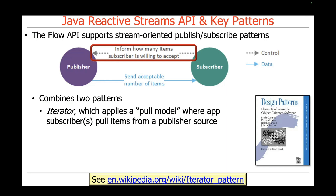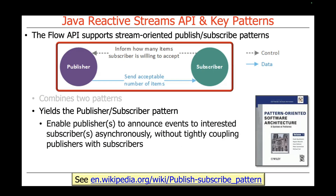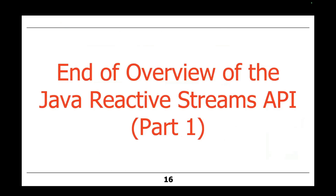The iterator pattern uses a pull model where subscribers tell publishers how many items they can pull at a given time. Then there's the observer pattern — another Gang of Four pattern — which applies a push model that reacts when a publisher's source pushes an item to one or more subscriber sinks. Iterator and observer are basically how the Reactive Streams Flow API interacts along a pipeline. This yields the publisher-subscriber pattern described in the POSA 1 book, enabling publishers to announce events to interested subscribers in an asynchronous manner without tightly coupling publishers with subscribers.